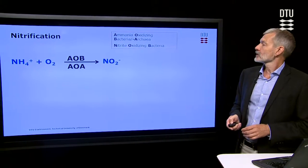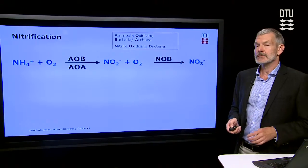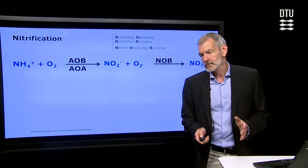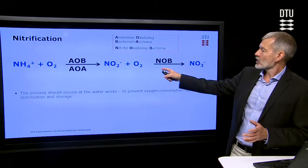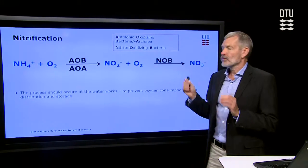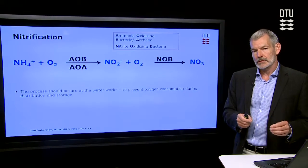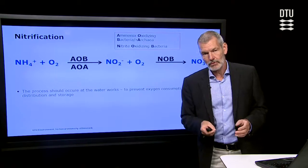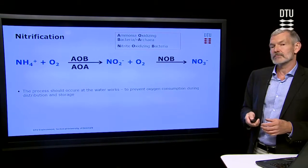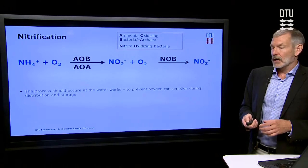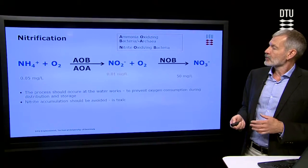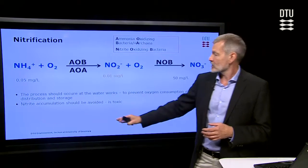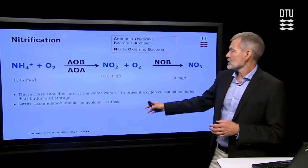And then we have nitrite oxidizing bacteria, which oxidize the nitrite into nitrate. Now, why are we interested in this process? Well, first of all, there is a lot of oxygen involved, and we don't want that process to occur outside the waterworks — we don't want it to occur in the distribution system and during storage, where the water may then lose oxygen. It is also important that the oxidation is complete, so we don't get accumulation of nitrite, because nitrite is actually toxic.